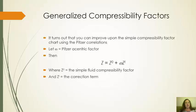The additional correction is going to be improved by using the Pitzer correlations. Omega is the Pitzer acentric factor. We've encountered this before. It's going to be a measure of how close the molecule is to being a sphere.